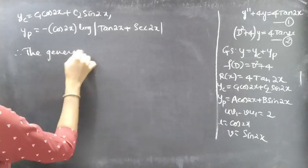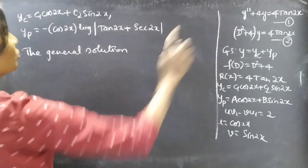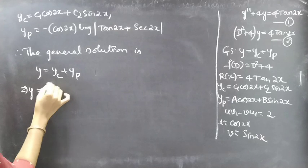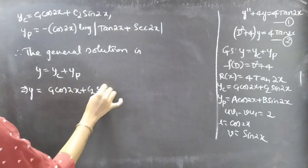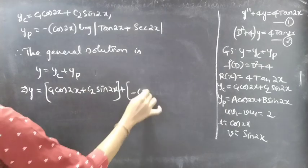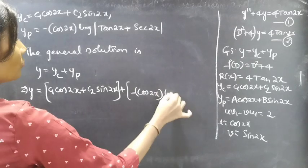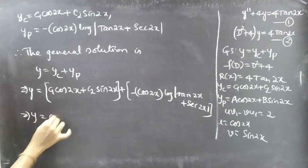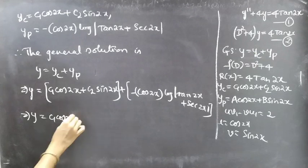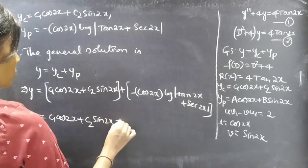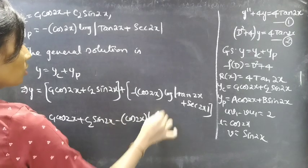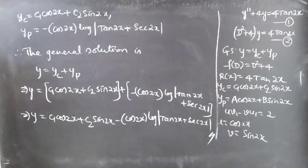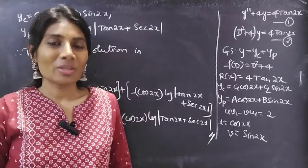Therefore the general solution of equation 1 is y = yc + yp: y = c1 cos(2x) + c2 sin(2x) − cos(2x) ln|tan(2x) + sec(2x)|. This completes the problem. That's all for now — I hope you understood. We'll see you in the next video. Until then, bye bye.